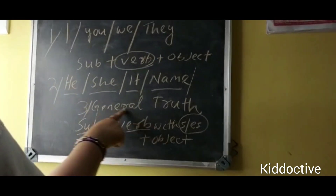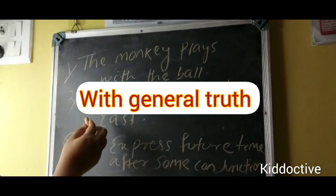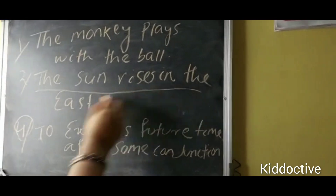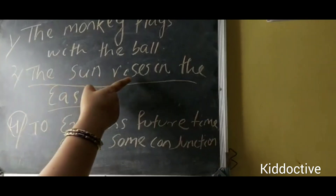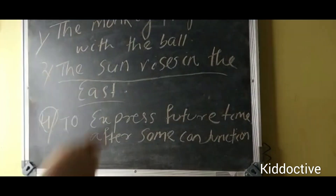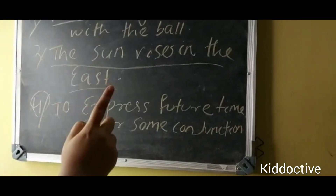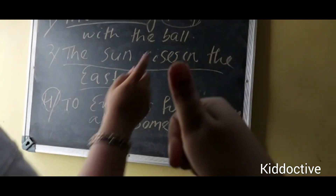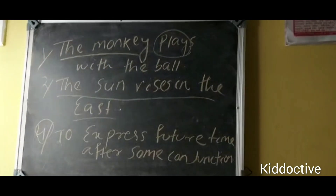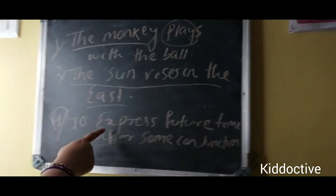The third rule is general truth. For example: the sun rises in the east, the sun sets in the west. This is a general truth — everyday the sun rises and sets. Like 'the monkey plays', not 'play'. With 'I', 'you', 'we', 'they' we use 'play', but for general truths starting with 'the', we add 's' or 'es' to the verb.